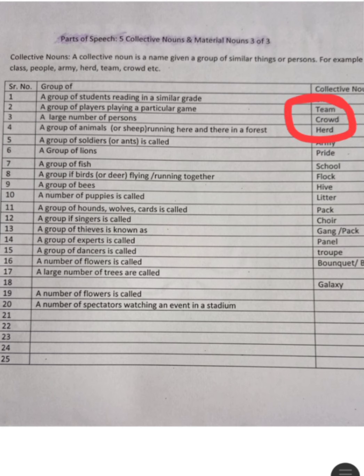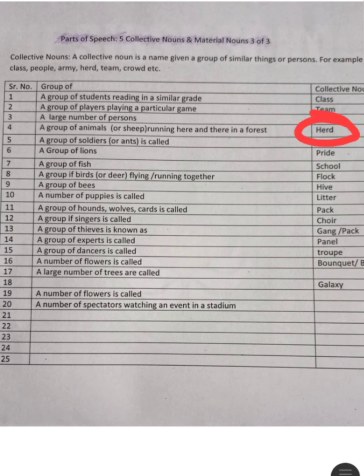خیلاڑی جو ایک ہی گیم کھیل رہے ہوتے ہیں انکو ٹیم بولتے ہیں۔ بہت زیادہ تعداد میں جو لوگ ہوتے ہیں انکو کراؤڈ بولتے ہیں۔ جانوروں یا بھیڑوں کا جھنڈ جو جنگل میں گھوم رہا ہوتا ہے انکو ہرڈ بولتے ہیں۔ ہرڈ، کراؤڈ، ٹیم، اور کلاس سب کولیکٹیو ناؤن کی مثالیں ہیں۔